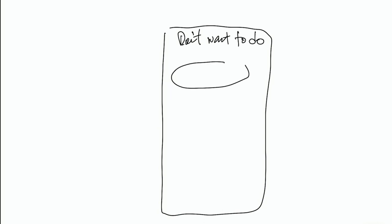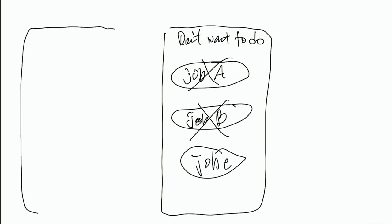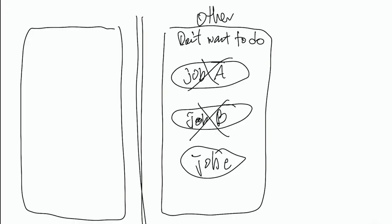You have job A and you find out, oh boy, I don't want to do that job. Then you have another job and you find out, I definitely don't want to do that either. Over time, what you find is that establishing the other — a list of the other — is actually starting to distinguish what the identity is, which is the job or career you want.